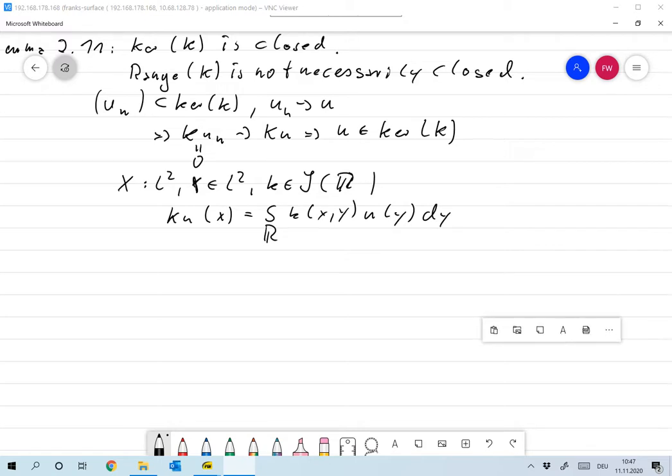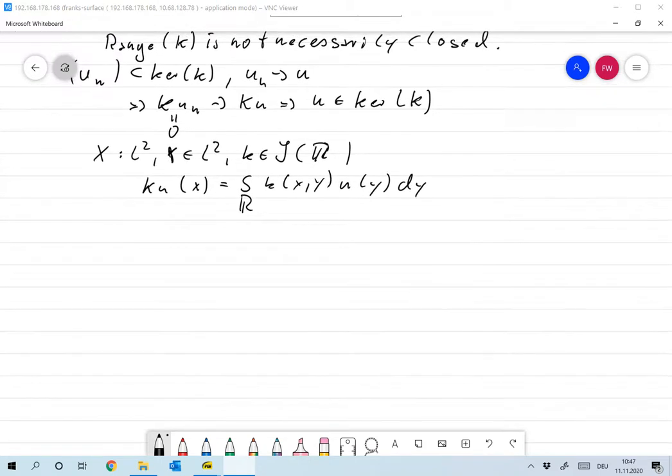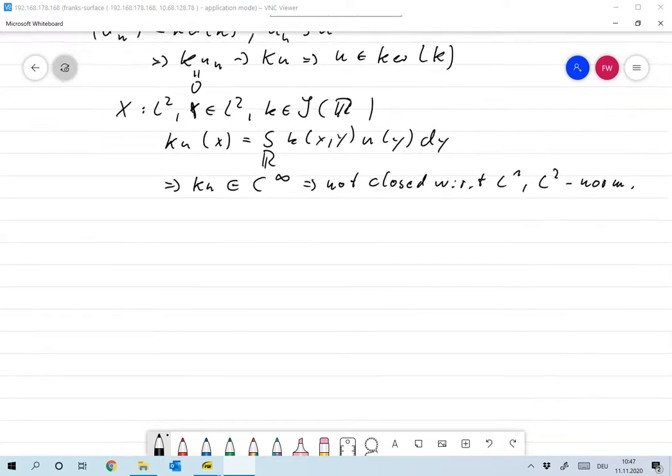Since k is in C-infinity, Ku is in C-infinity as well. So this is a subset of C-infinity functions. And as you know, this can never be closed with respect to the l1 or l2 norm. So it's already clear that ranges are not always closed.